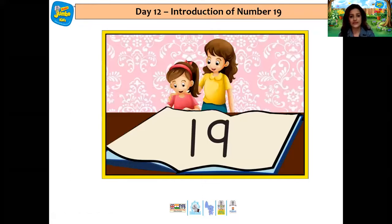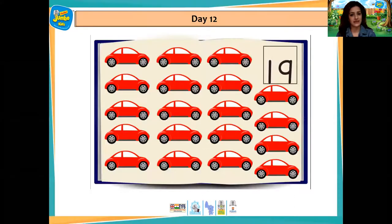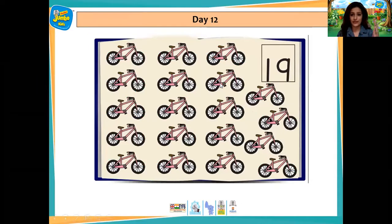Here we go, children. Kiara had her dinner and she went to her room reading her number book, and she found a new number which was number 19. Then she started counting the cars: 1, 2, 3, 4, 5, 6, 7, 8, 9, 10, 11, 12, 13, 14, 15, 16, 17, 18, 19. There were 19 red cars. Then she turned the page and found some cycles.